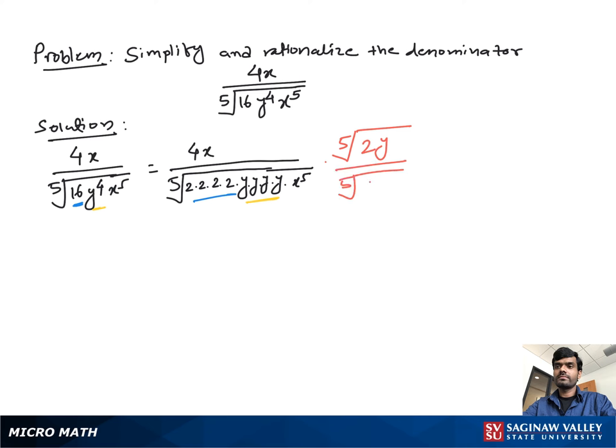So multiply both numerator and denominator with the 5th root of 2y. Now you get 4x times the 5th root of 2y over the 5th root of 2^5y^5x^5.